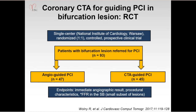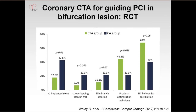So what data do we have to justify the uptake of coronary CT for guiding bifurcation PCI? The concept of CT-guided PCI for planning bifurcation intervention was first explored in our center in a prospective randomized clinical trial, which randomized 93 patients with bifurcation lesions to either angiography or CT-guided PCI. Interestingly, the CT-guided approach resulted in a lower number of implanted stents in both the main vessel and the side branch, as well as a higher frequency of non-compliant balloon post-dilatation.